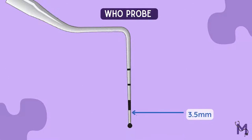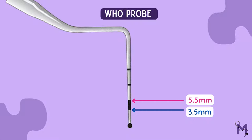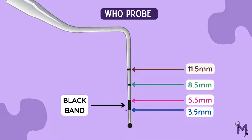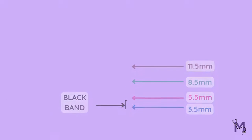The markings are 3.5, 5.5, 8.5 and 11.5. Also remember that the probe has a black band which extends from the marking of 3.5 to 5.5.